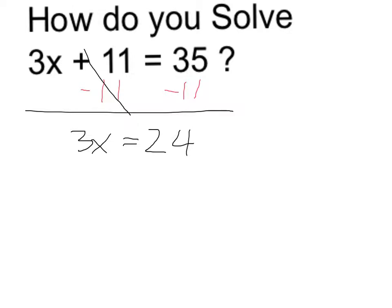So I have 3 times x, 3 times some number is equal to 24. To undo the multiplication, I'm going to divide. If I do it to one side, I have to do it to the other. So I'm left with x equals 24 divided by 3, which is 8.